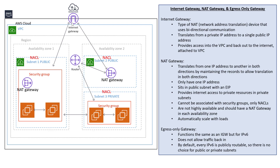Internet gateways translate a private address to a single public IP address, and they're great for public resources. For example, from a previous video on Bastion Host, we have our Bastion Host sitting in a public subnet. When it goes out to the internet, it will use its private IP address that is attached to the EC2 instance itself.